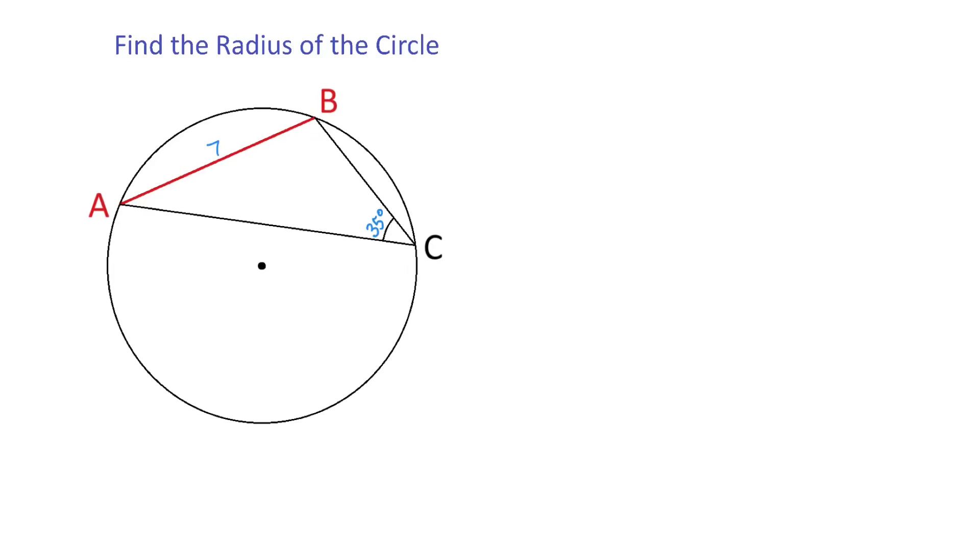In this figure we have a triangle inscribed in a circle. Side AB is 7 units and angle C is 35 degrees. We need to find the radius of this circle.